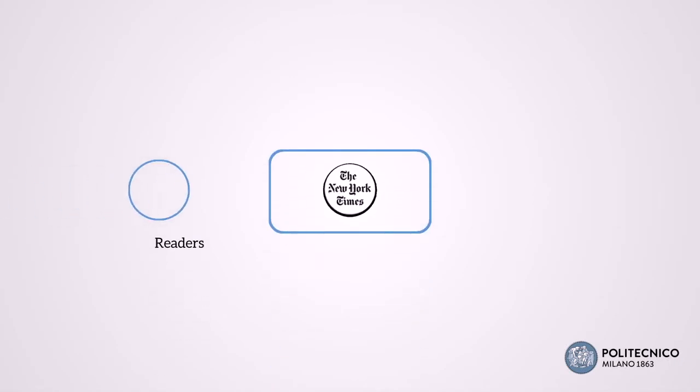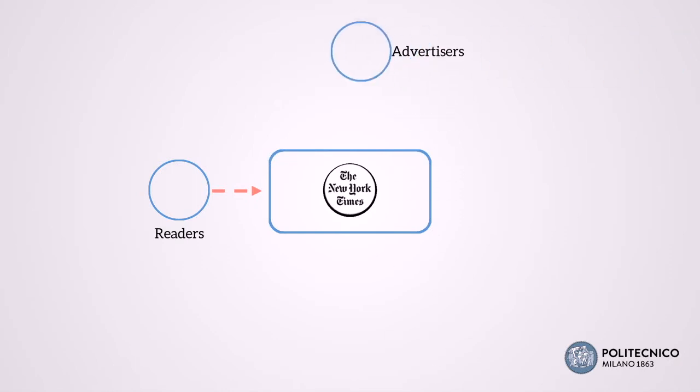Another example of a two-sided market is the newspaper industry. On one hand, there are the readers, which are subsidized through the existence of a second group — the advertisers — which pay the platform provider to reach the readers.